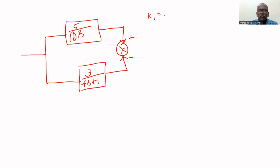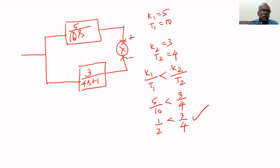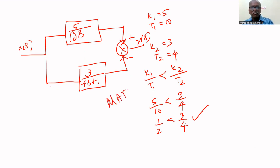For example, if k1 = 5, t1 = 10, k2 = 3, t2 = 4, then k1/t1 = 5/10 = 0.5 and k2/t2 = 3/4 = 0.75. Since 0.5 is less than 0.75, k1/t1 is less than k2/t2 — yes, that's why this system will exhibit an inverse response. You can check this in MATLAB simulation.